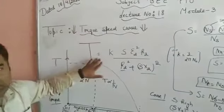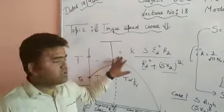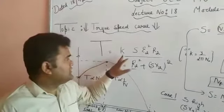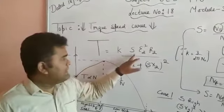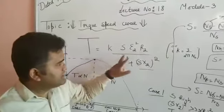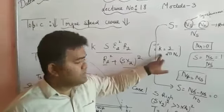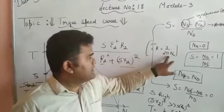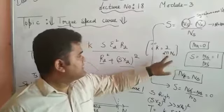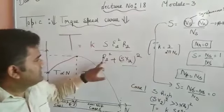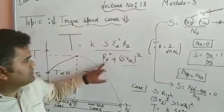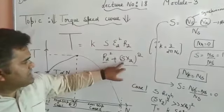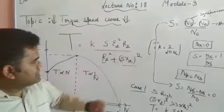Now while talking about the torque-speed curve, we must know what is the formula for the torque. It is K times S, where S is the slip, K is a constant, and the constant value is 3 upon 2 pi times KS upon R2 squared plus SX2 squared.